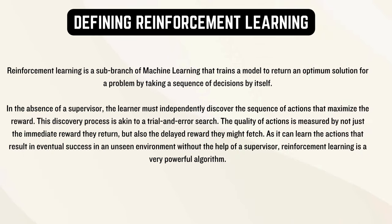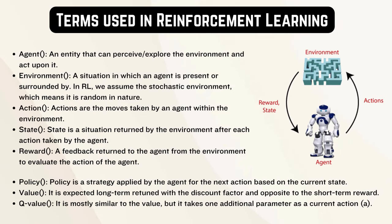Reinforcement learning is a sub-branch of machine learning that trains a model to return an optimum solution for a problem by taking a sequence of decisions by itself. The terms used in reinforcement learning are agent, environment, action, state, rewards, policy, value, and Q-value. The details are mentioned here.